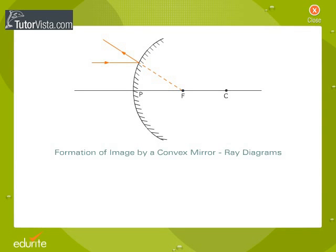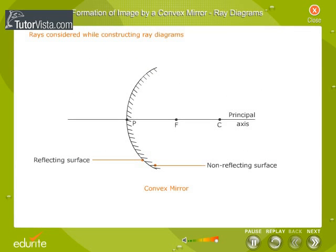Formation of image by a convex mirror - Ray diagrams. In order to know the position and nature of the image formed due to reflection of light from a spherical mirror, generally two rays coming from the same point of an object are considered.